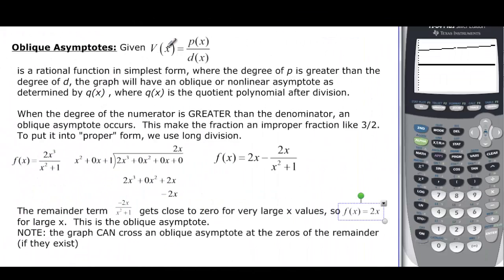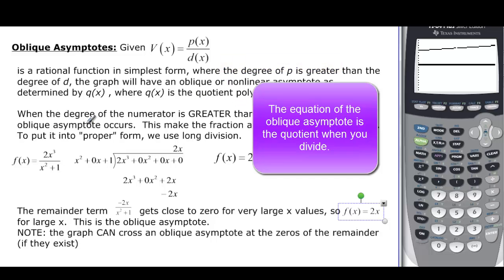So oblique asymptotes. We have these rational functions, and we talked about finding horizontal asymptotes if the numerator was less than the denominator degree or equal. But when we have a greater, that's when we're going to have an oblique asymptote. And we find that by finding the quotient when we divide.